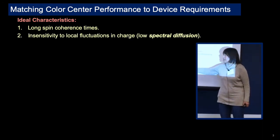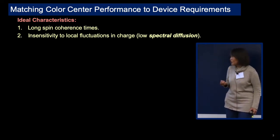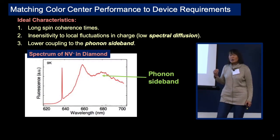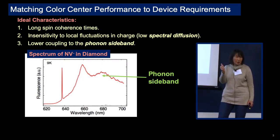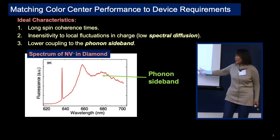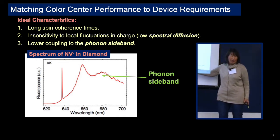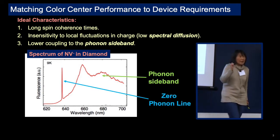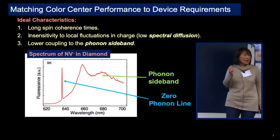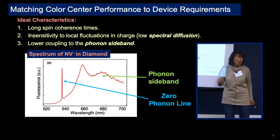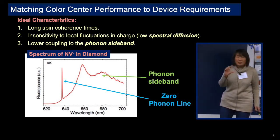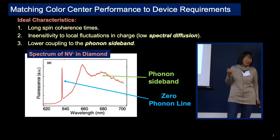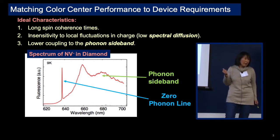In addition, we need insensitivity to local fluctuations in charge — a factor we call low spectral diffusion. And lower coupling of the photon signature to what, for many of these candidates, has a broad phonon sideband, as indicated here by the spectrum of NV minus in diamond. This is what we call the zero-phonon line — a signature that gives us indication by dint of its wavelength of a spin and by dint of its intensity of the spin state of that NV minus. But here is the broad phonon sideband, which very often provides an impediment to the clear readout and contrast of that signal.